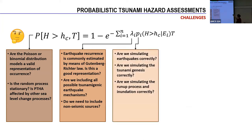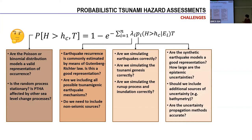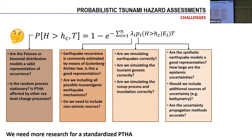Other problems are related with how we obtain the value of PI, the conditional probability, which requires physical and numerical models to model tsunamis and earthquakes, as well as stochastic modeling to generate earthquake samples. There are many questions about how accurate our physical models are in order to get PI. We need a lot of research to improve probabilistic tsunami hazard assessment.